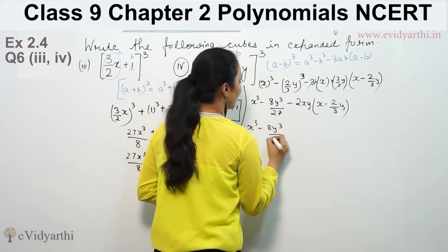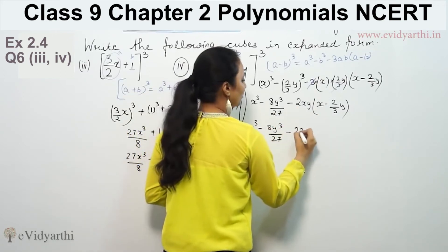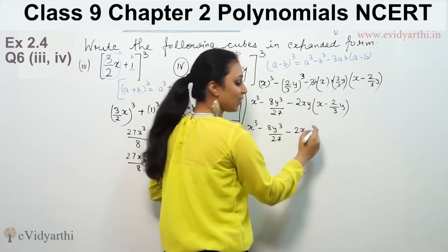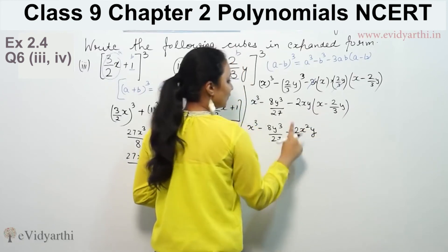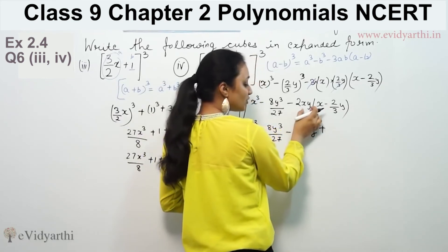x³ - 8y³/27. We multiply 2xy times x, so we get 2x²y. Minus minus is plus.